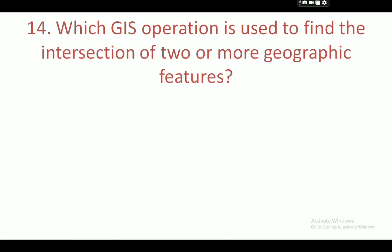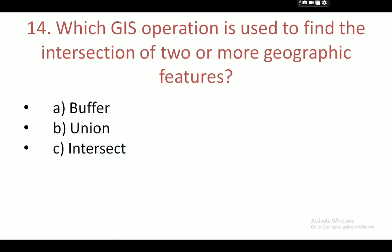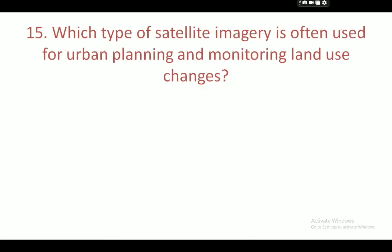Next question: which GIS operation is used to find the intersection of two or more geographic features? Your options are: buffer, union, intersect, and merge. Your correct answer is intersect.